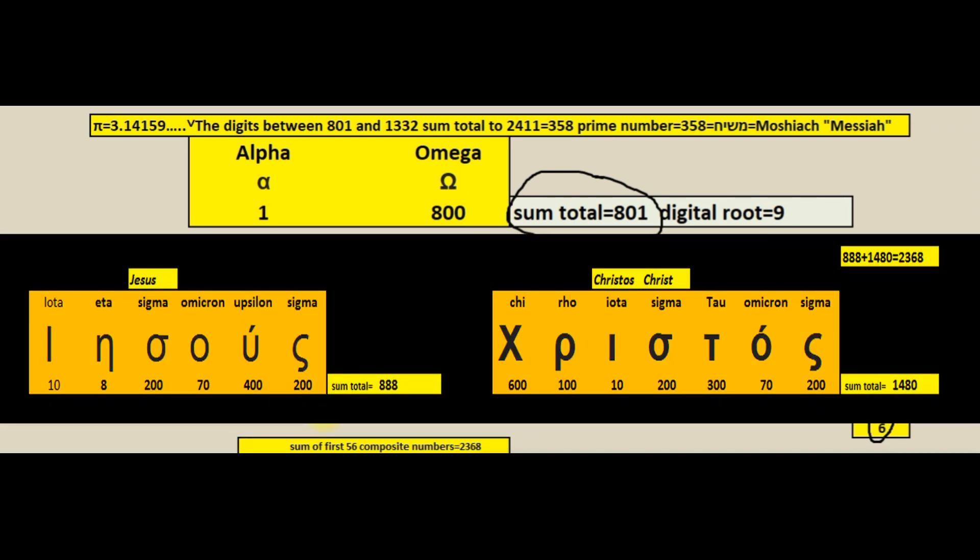The sum of the first 56 composite numbers is 2368, the Greek letter value sum total of the Holy Name, Jesus Christ.